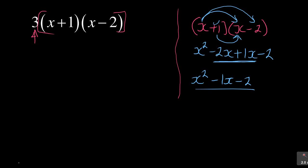You're left with -2. Now don't leave out the 3. The 3 is now multiplying (x² - 1x - 2). We distribute the 3: the 3 multiplies x², the 3 multiplies -1x, and the 3 multiplies -2.